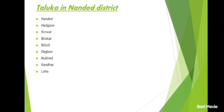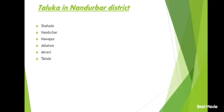Nagpur district and its talukas: Nagpur, Urban, Savner, Parseoni, Ramtek, Mouda, Kamthi, Kuhi, Bhiwapur, Umrer, Nagpur Rural, Hingna, Katol, Narkhed, Kamleshwar.